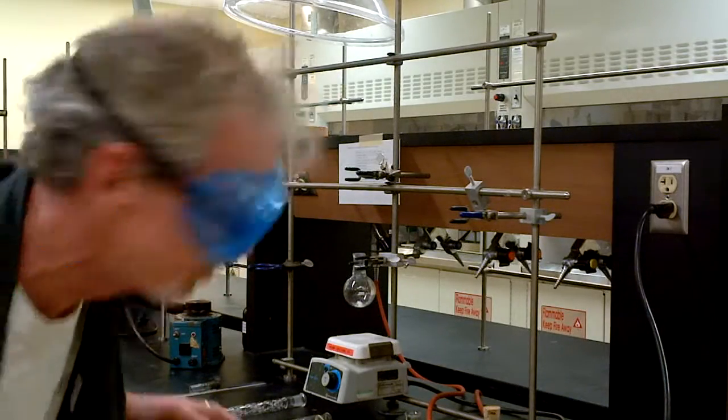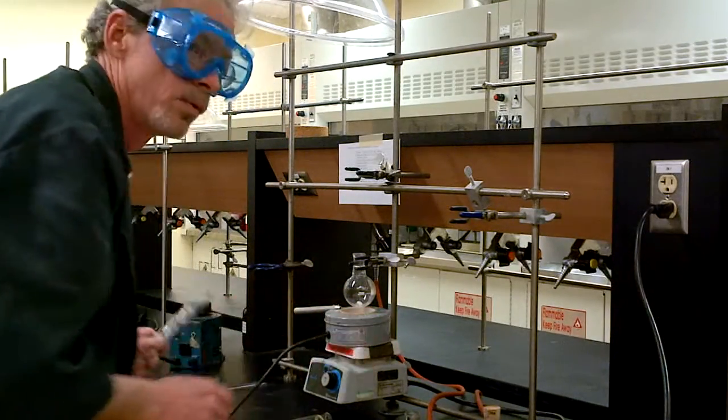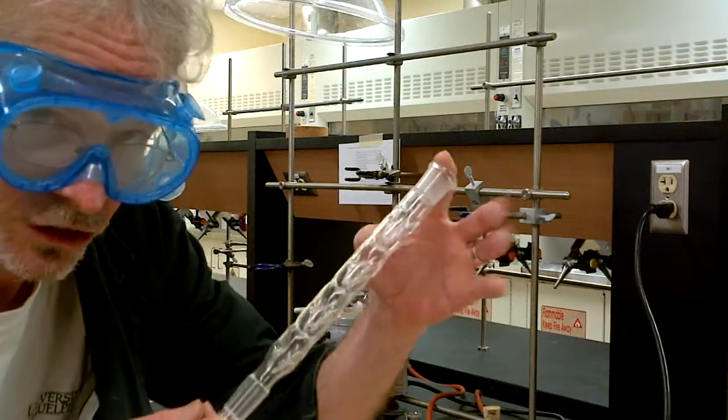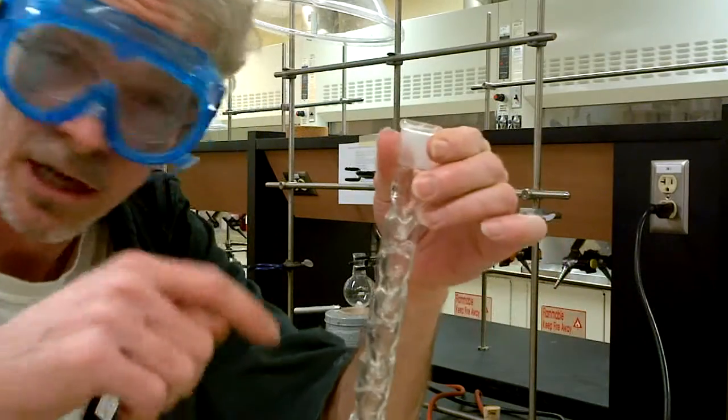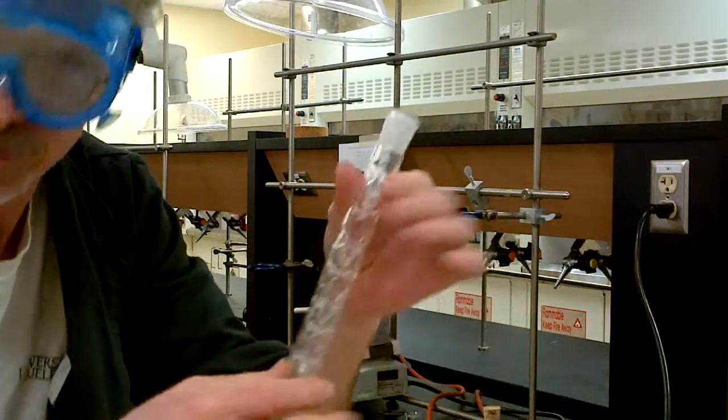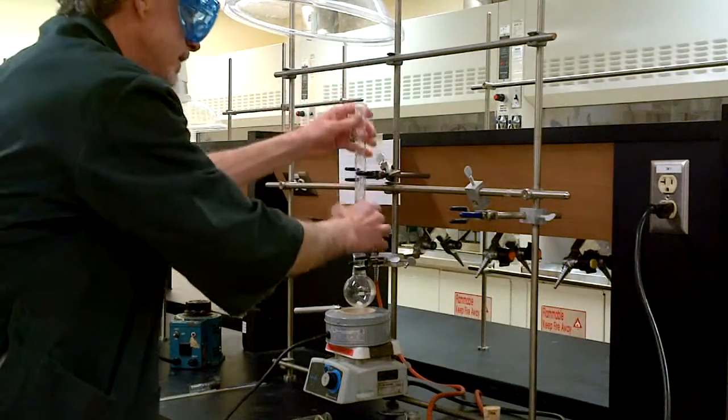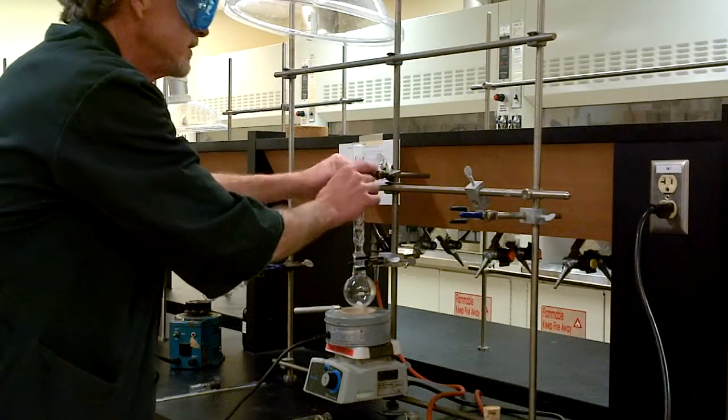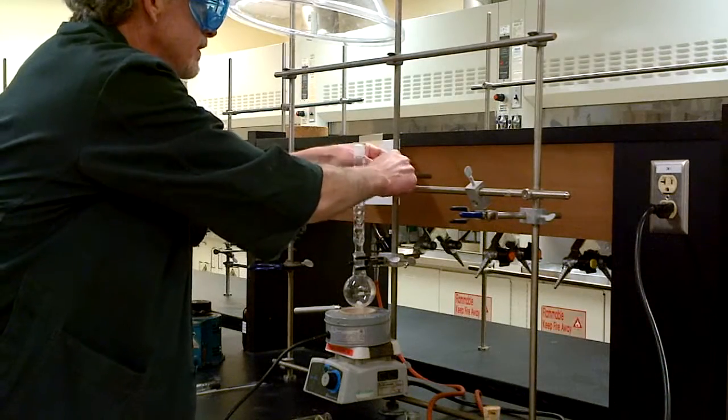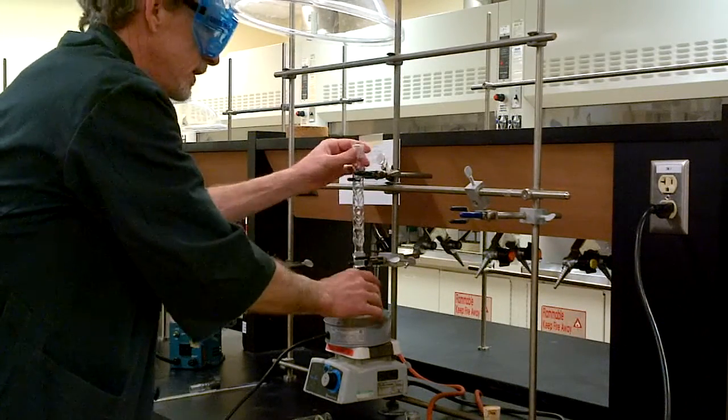So there we go. We have the fractionating column. This one is called the vigru column. It's got funny points in it and it's a French name. And off it goes right in there. And you'll notice I have a second clamp right here. This is going to make sure that the apparatus does not fall over. Falling over is bad.